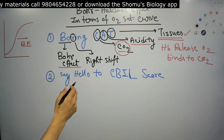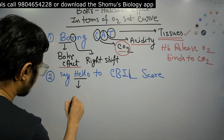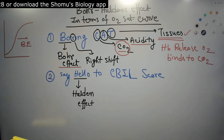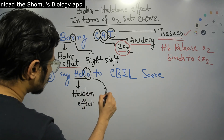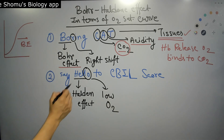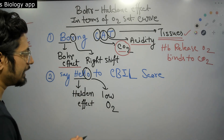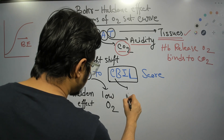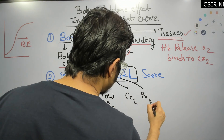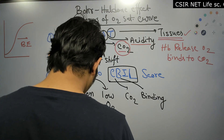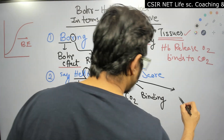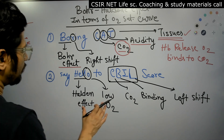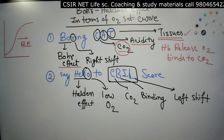The next sentence is 'say hello to CIBIL score.' Here, 'hello' stands for Haldane effect. Within 'hello,' LO stands for low O2 — low oxygen. Then in 'CIBIL,' C stands for CO2, B stands for binding (CO2 binding), I is not required, and L stands for left shift. So the Haldane effect is associated with low oxygen, increased CO2 binding to hemoglobin, and a left shift of the oxygen saturation curve.